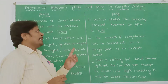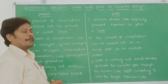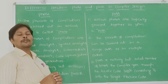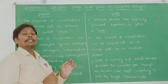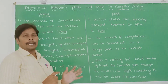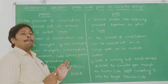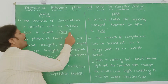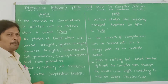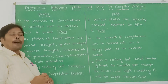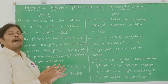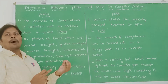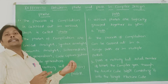There are mainly three differences. The first one is: suppose we want to compile a source program, we have to follow different number of steps. The process of compilation is carried out in various steps, which can be called as phases. Whereas in the case of pass, various phases are grouped together to form a pass.